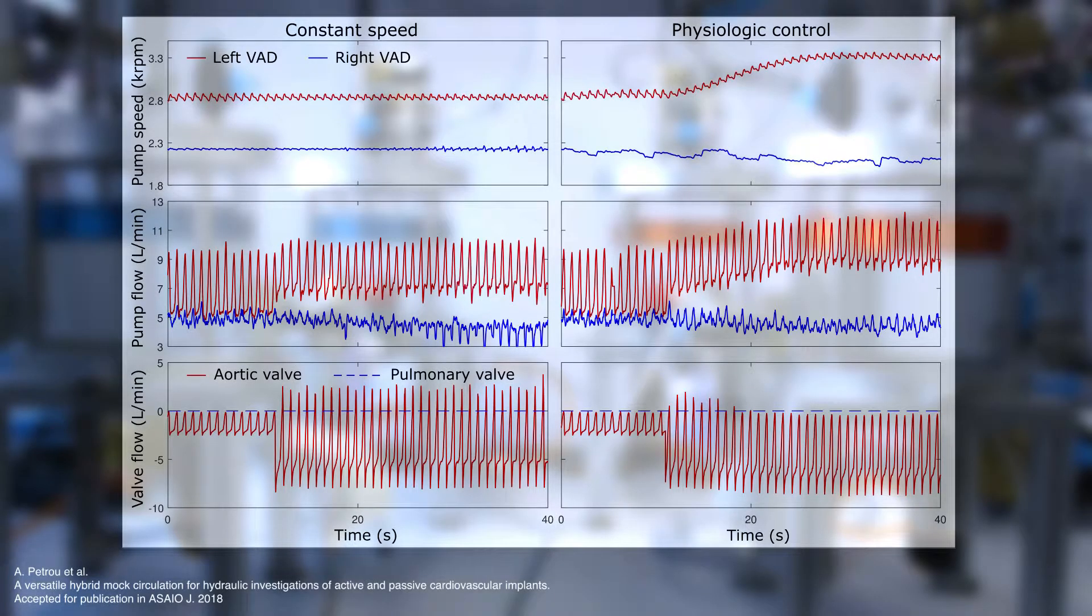As an example of the investigations performed on the versatile hybrid mock circulation, I would like to present the results during the b-ventricular support test case. Both ventricles were supported with an HVAD. A transition from mild to severe aortic insufficiency was investigated.